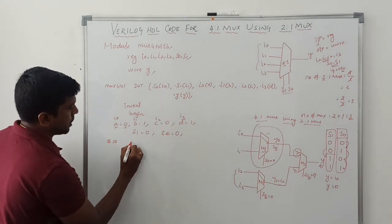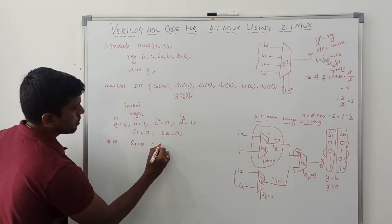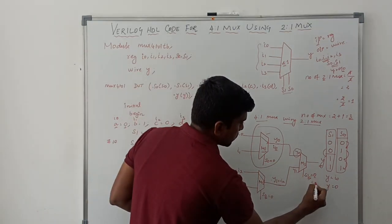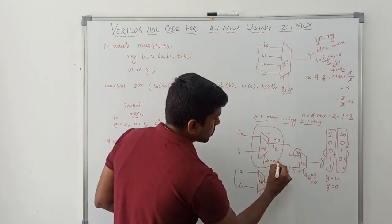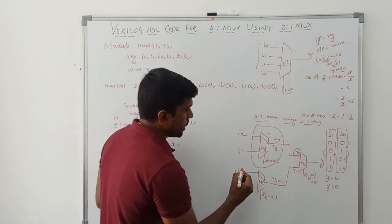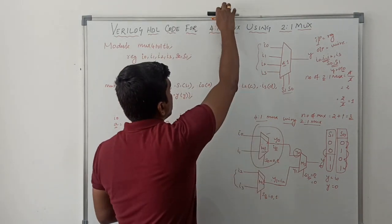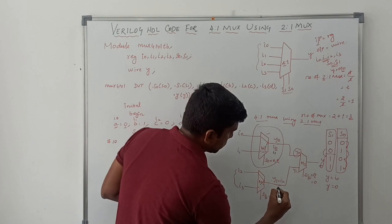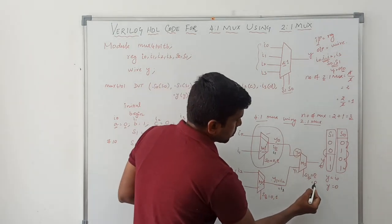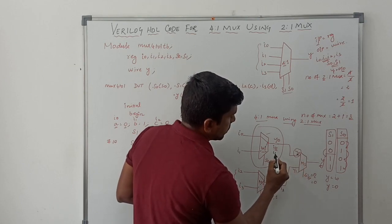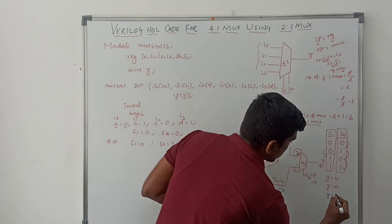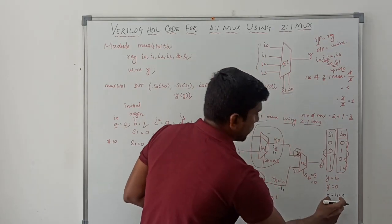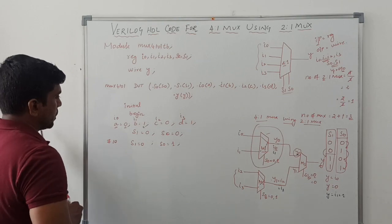After 10 nanoseconds, change selection line s0: s1 remains 0, and s0 goes to 1. So with s0=1, i1 is connected to y0, and i3 is connected to y1. Since selection line s1=0, y0 is selected. The corresponding output y equals i1. Since b=1, the output y value equals 1.